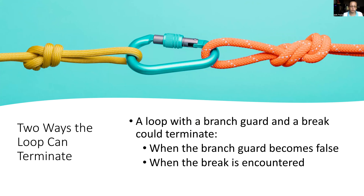This brings up an interesting point: there are in fact two ways the loop could terminate. If you have a branch guard and a break, either one can end the loop. It could terminate when the branch guard becomes false — when we get back to the top and check it and it's false, the loop ends as usual. Or, if you encounter the break inside the if statement, that also terminates the loop.